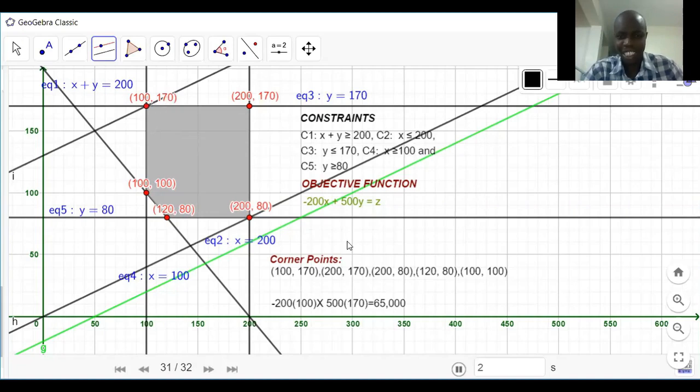Look at this. 100 and 170. So that gives 65,000, the maximum profit that can be realized. So the x was standing for scientific calculators, and then y was representing the number of graphing calculators. So if the company makes 100 scientific calculators and 170 graphing calculators, then they will maximize the profit. When they try, if at all they try to make 200 scientific calculators in a day and 80 graphing calculators in a day, there will be no profit. The amount they will make is nothing, nil. So it will be zero.